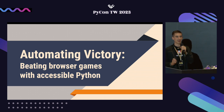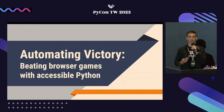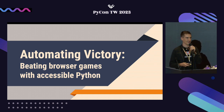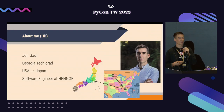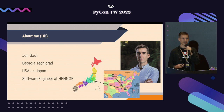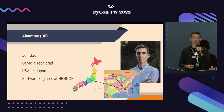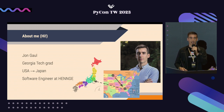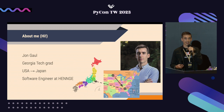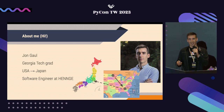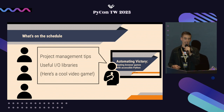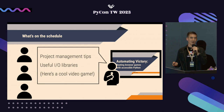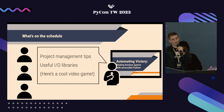Hello everyone, I'm so excited to be here with you all today. My talk is 'Automating Victory: Beating Browser Games with Accessible Python.' A little about me: I'm John. I grew up in North Dakota in the US, went to Georgia Institute of Technology where I studied computer science, and last year I moved to Japan for work. I live in Tokyo, where I work as a software engineer at Henge. Last year I wrote a script that could beat a favorite in-browser video game of mine.